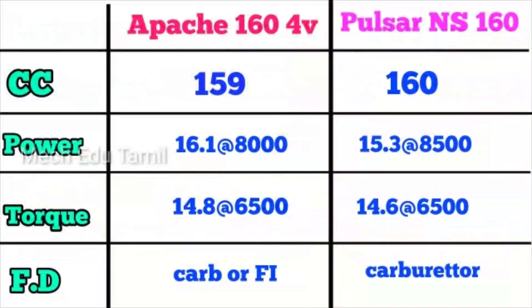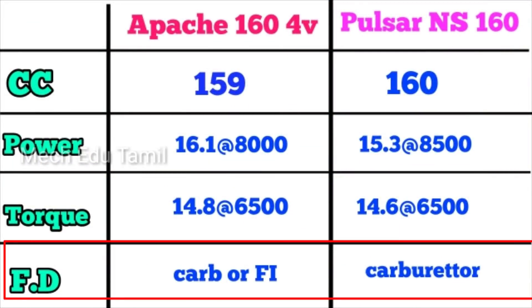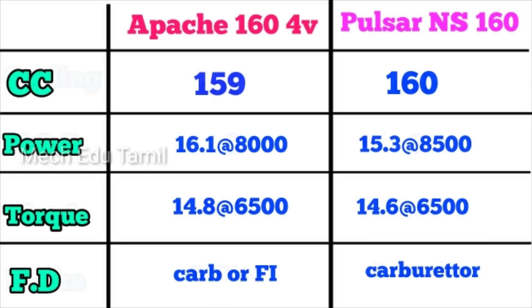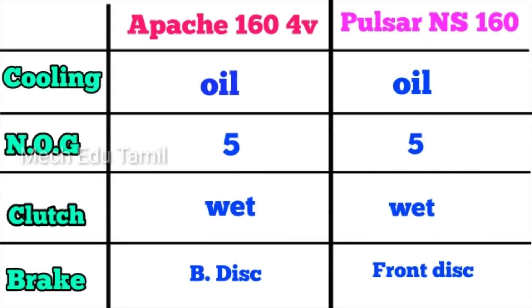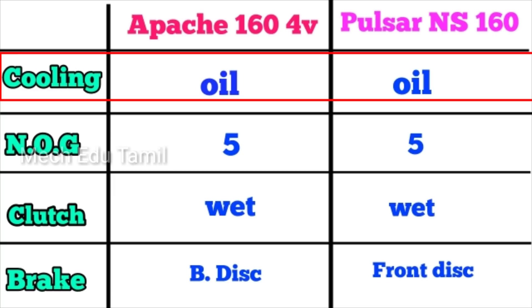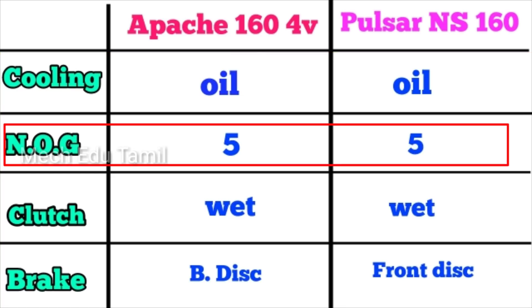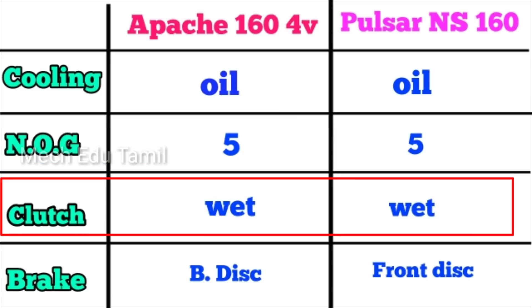For fuel system, the Apache has a fuel injection system, while the Pulsar NS160 uses a carburetor and does not have fuel injection. Both bikes have an oil-cooled engine system which provides good performance. Both bikes also have 5-speed gearboxes and a wet multi-plate clutch.